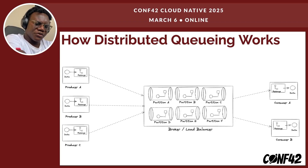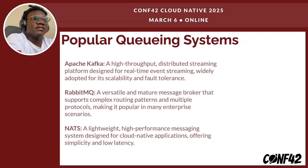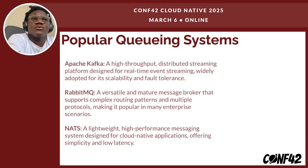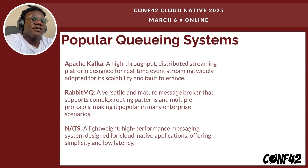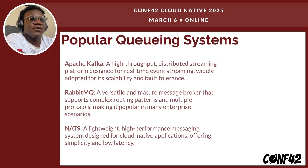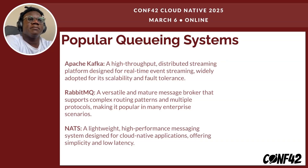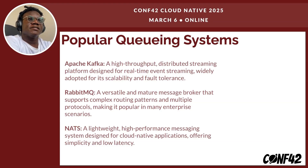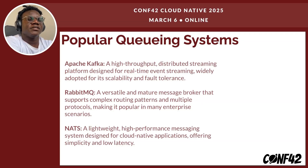Some of the popular queuing systems are Apache Kafka, a high-throughput distributed streaming platform designed for real-time event streaming, widely adopted for its scalability and fault tolerance. RabbitMQ is quite mature, supports complex routing and different protocols, and is also very popular. NATS is a lightweight, high-performance messaging system popular in cloud-native applications for its simplicity and low latency. The distributed queuing strategy and partition management are usually handled by the broker itself, so most of the time you don't have to manage this yourself.